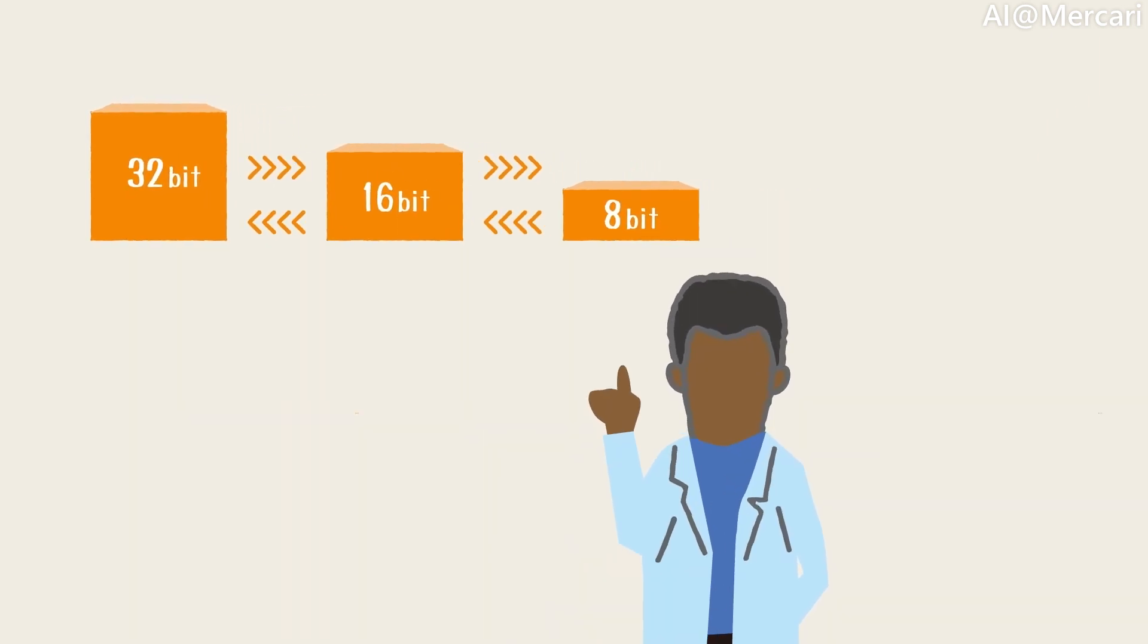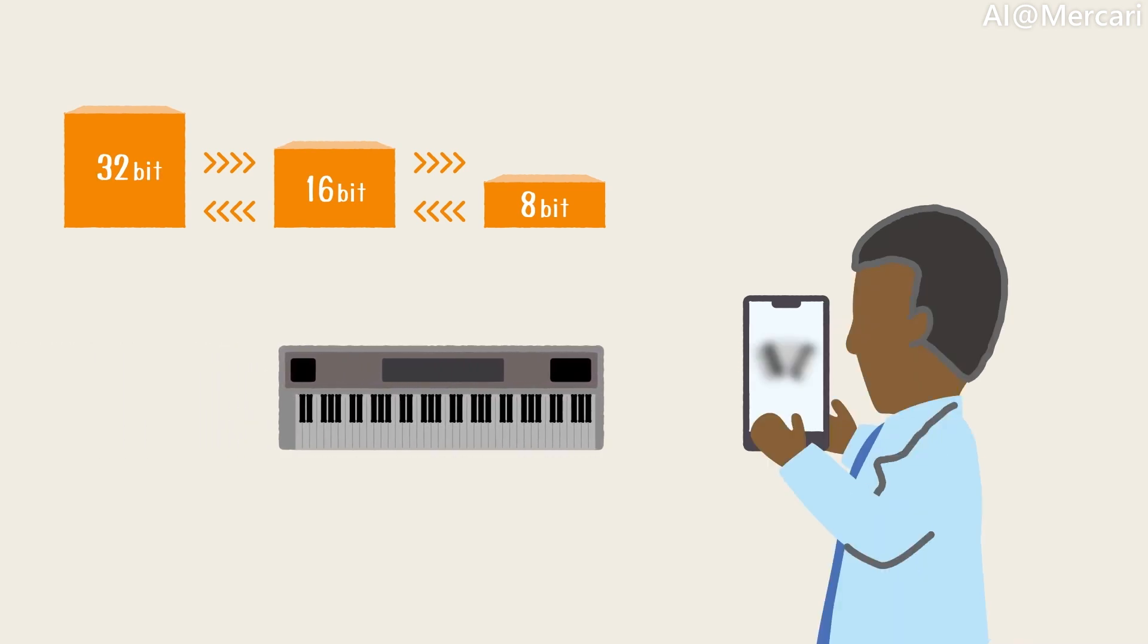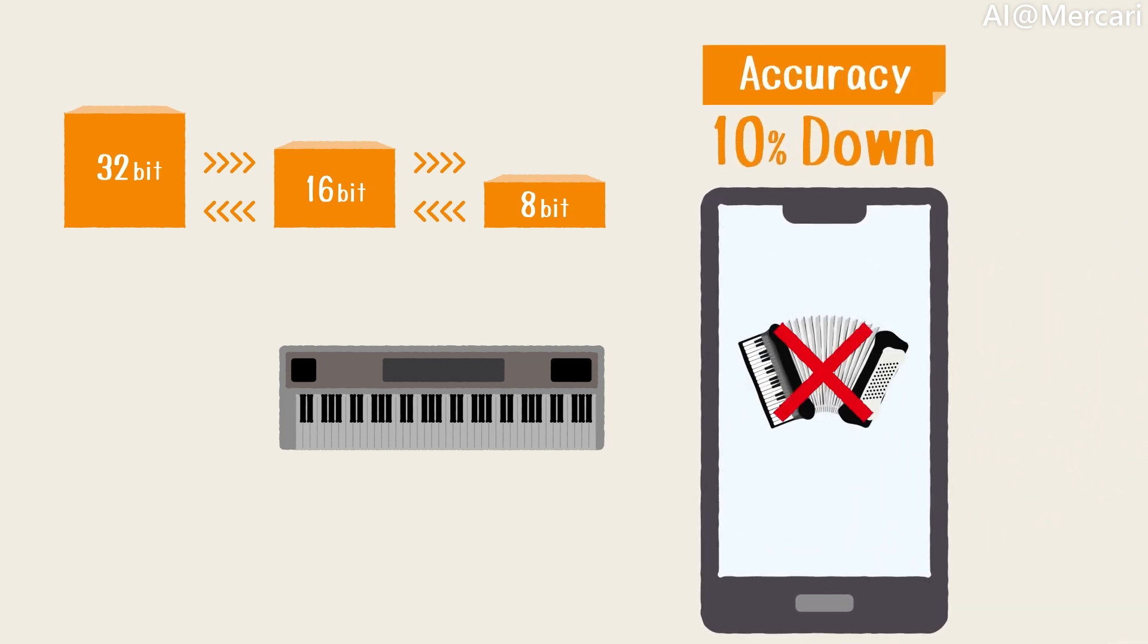There are a couple problems that we need to be aware of during the quantization process. The first one is the decline in accuracy. As previously mentioned, by decreasing the amount of data we store, we are sacrificing some accuracy. The actual difference depends on the task or the types of model that you use. But prediction accuracy may drop by as much as 10% if we're not careful.